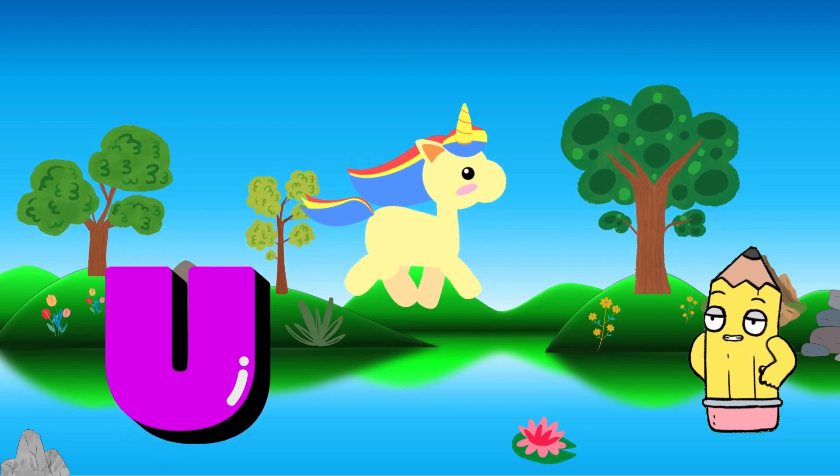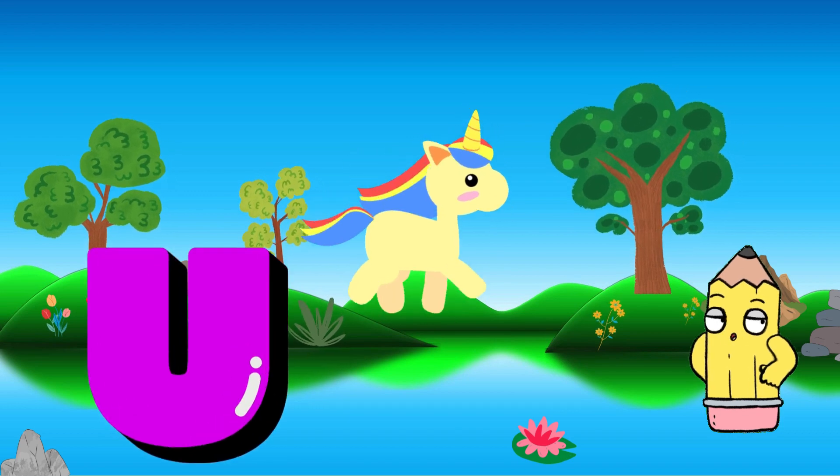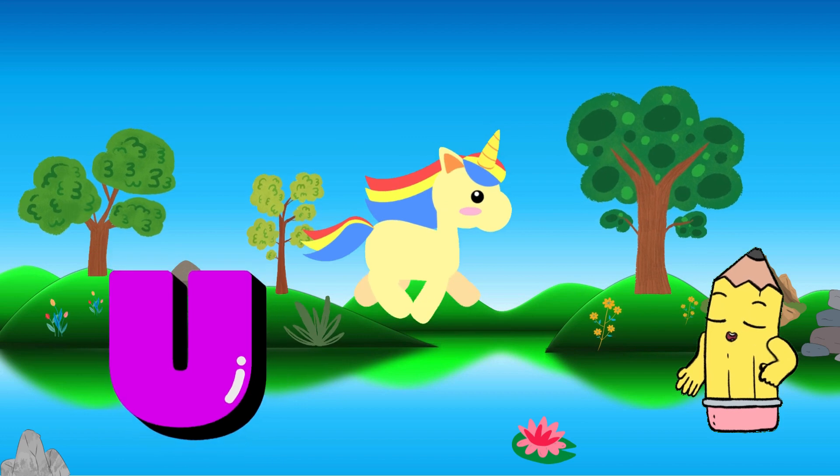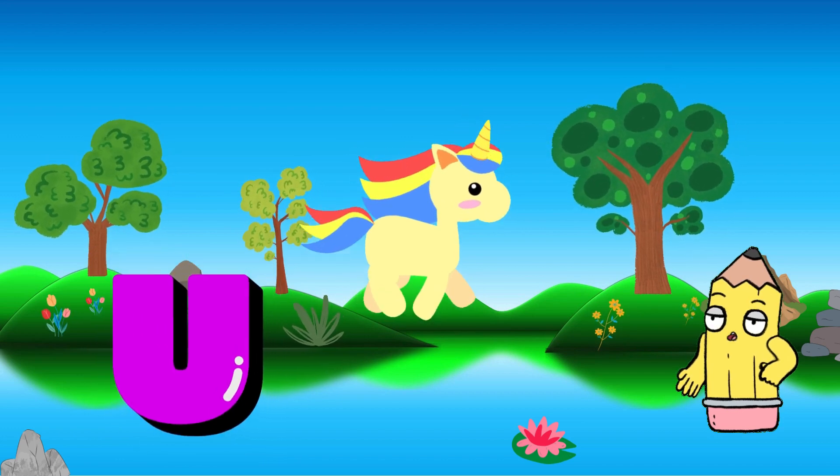Our quest continues with the letter U. Can you say it with me? Unbelievable! U is for Unicorn, a magical creature joining our alphabet play.